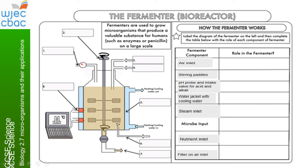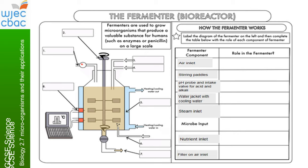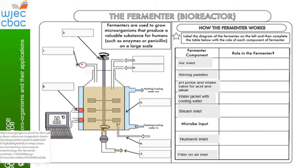Now I want you to add the correct labels to your diagram. Using the information from the video — rewind if you need to — write the role of each of the different components. In your booklet it says 'air supply' — air inlet or supply would be equally fine. Stirring paddles or paddle stirrers, pH probe, water jacket, steam inlet, microbe input, nutrient inlet, filter on the air inlet, and product outlet are all labels you need. See if you can label that up. Pause the video if you need to.